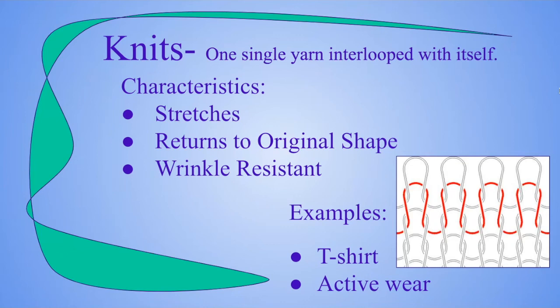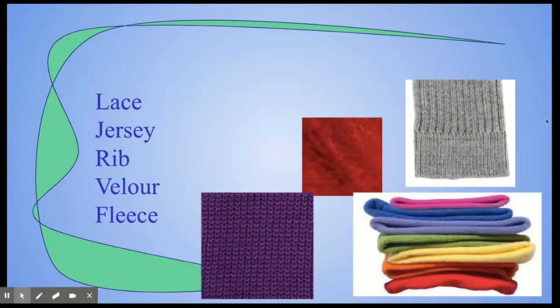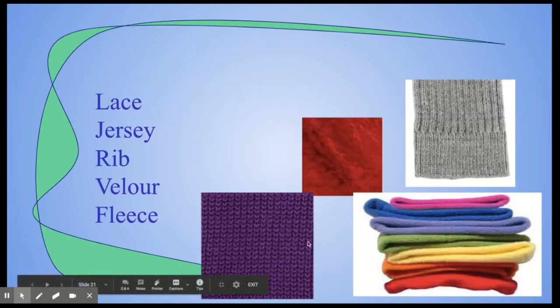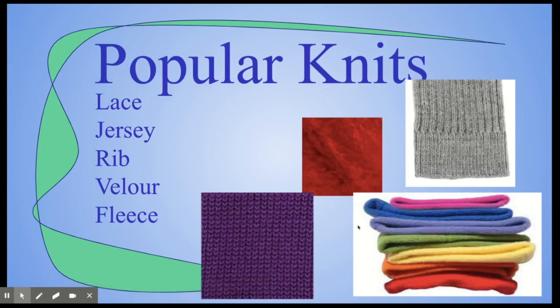Another fabrication method is called a knit. A knit is when we take one single yarn and we loop it through itself over and over again. Characteristics: it stretches, meaning it's more comfortable to wear; it returns to its original shape after being stretched; and it's usually resistant to wrinkles. Examples would be t-shirts or activewear like yoga pants. It can also be lace, jersey knits, rib knits, velour, or fleece. Those different V-shapes you see are the different loops that have been looped together.